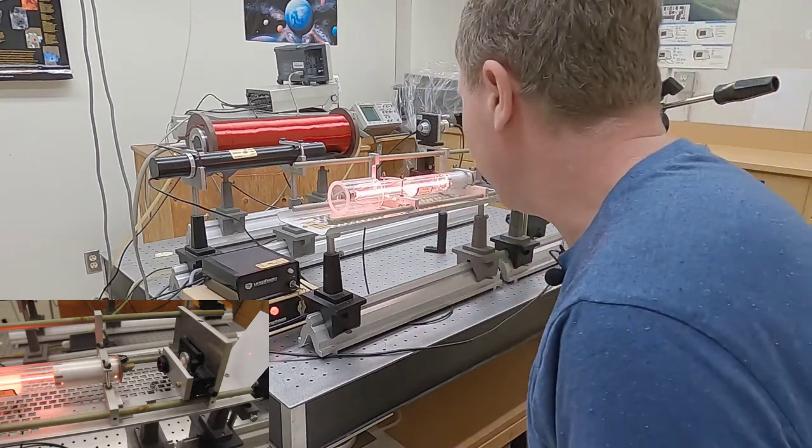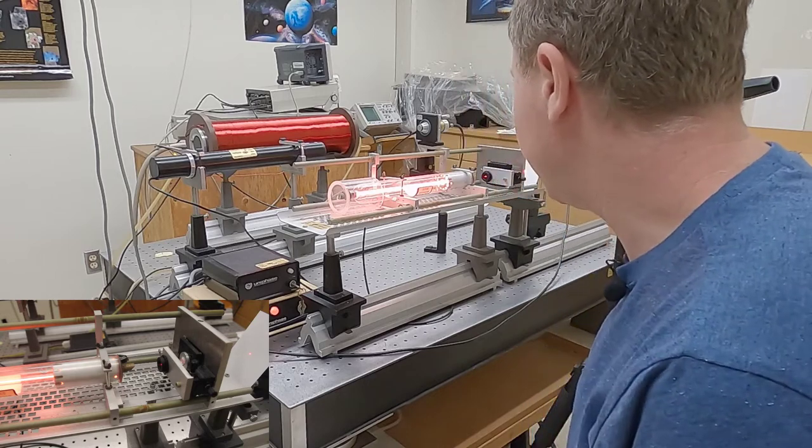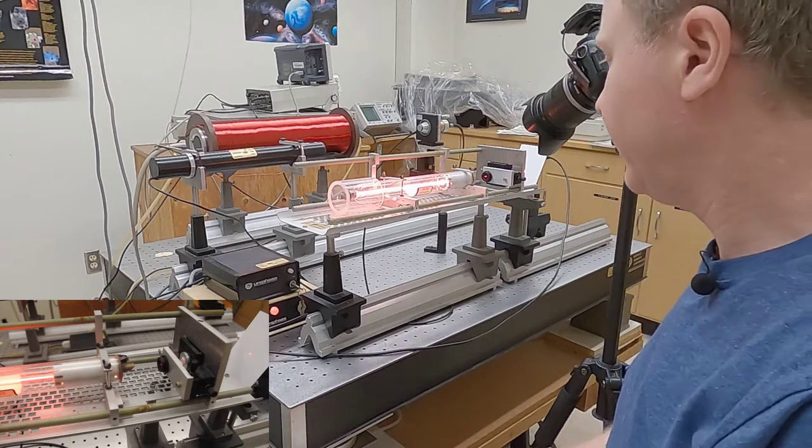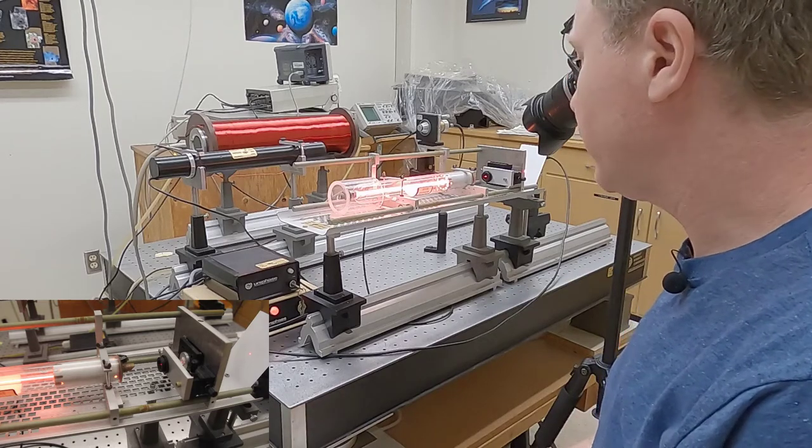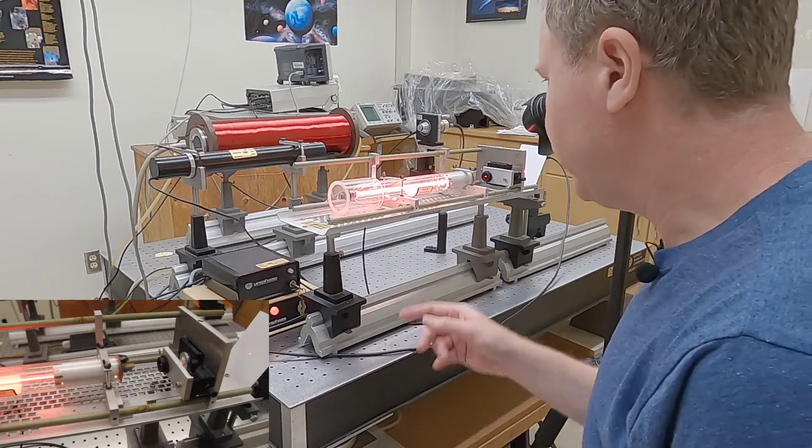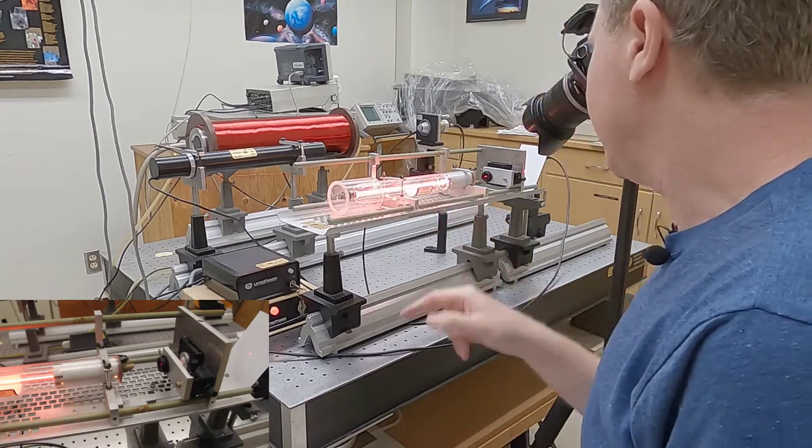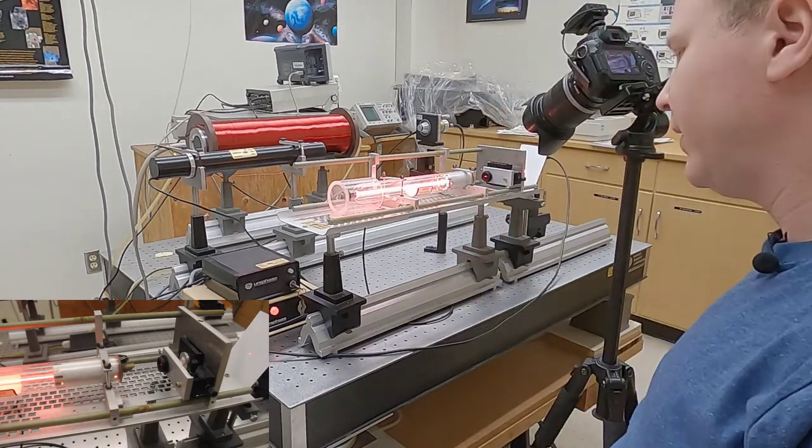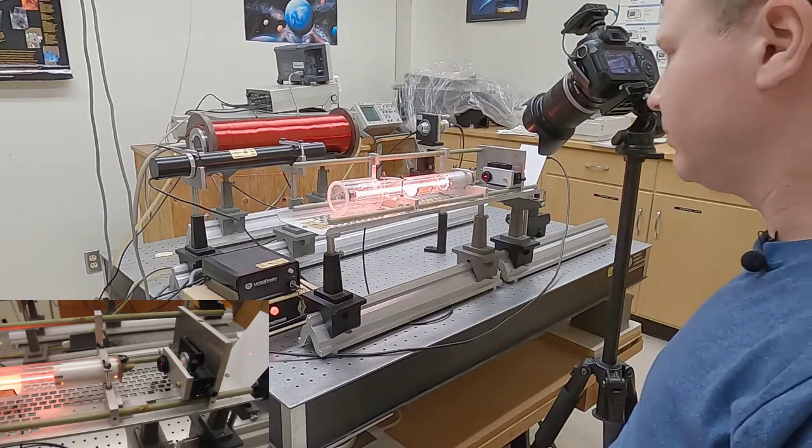What you see very bright is this glowing pink tube, and inside of this tube is a mixture of helium and neon. There's about ten times as much helium as there is neon inside of this tube. You take this tube and you attach electrodes on this side, which is probably the high voltage side.